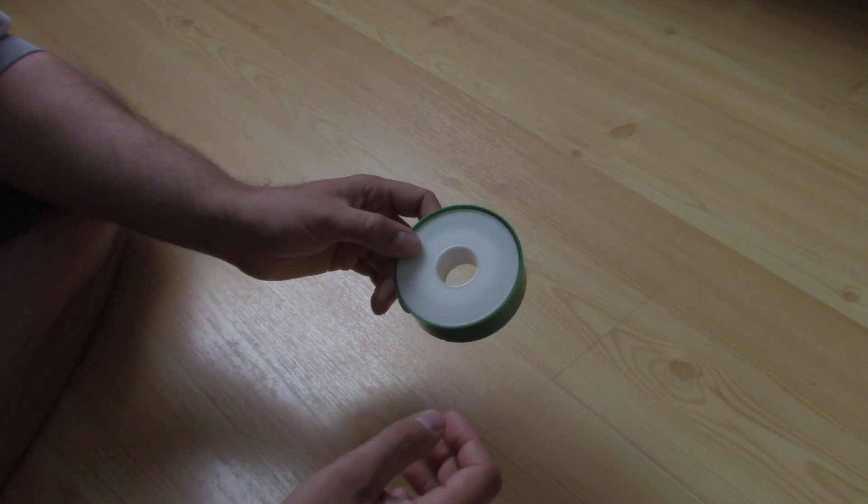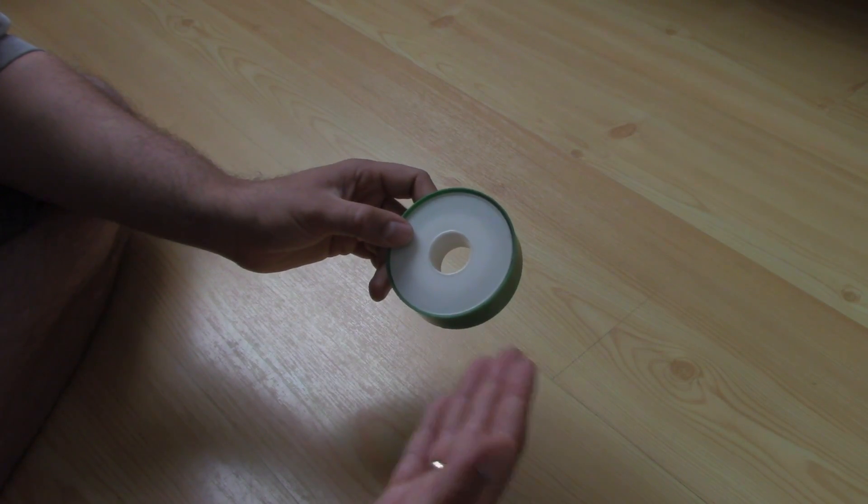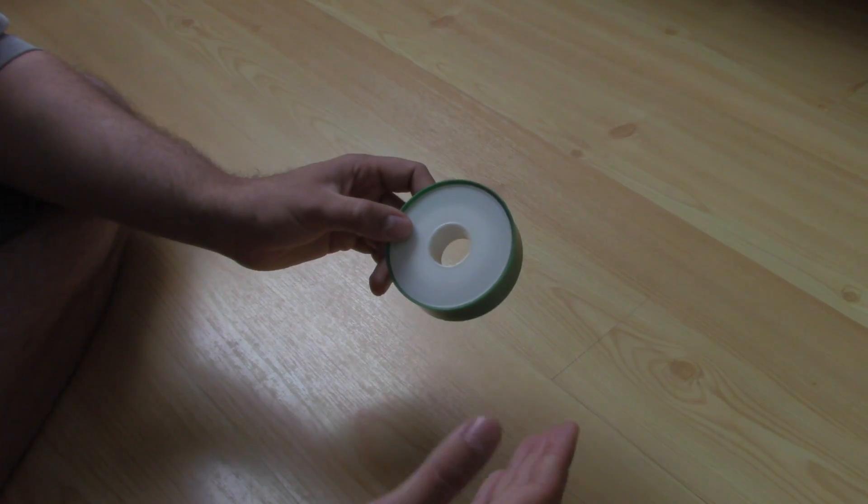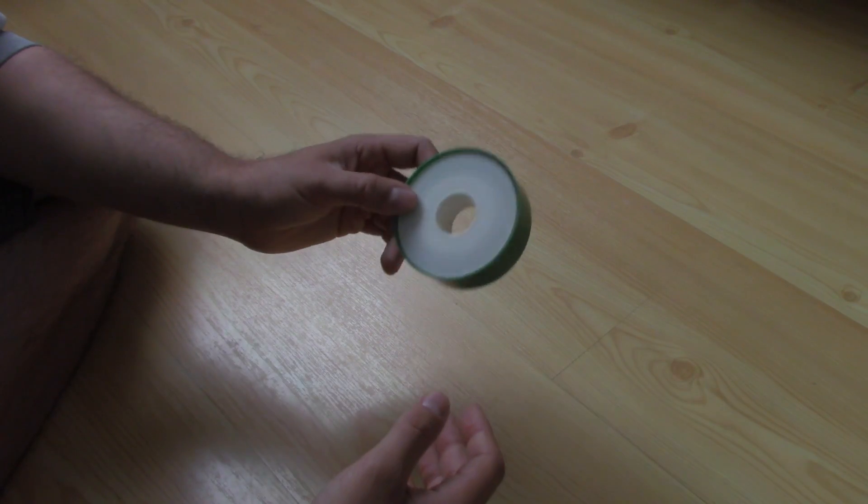You need to, in theory, switch that seal every time you change the oil. So some people, instead of doing that, just use Teflon tape or plumber's tape, PTFE tape, whatever it is.